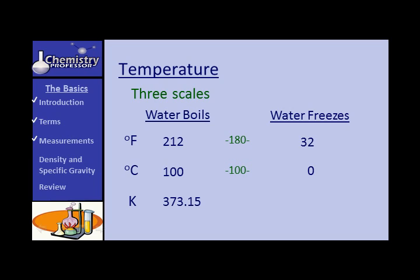For Kelvin, water boils at 373 K and freezes at 273 K — a range of 100 units. This tells us that a degree Celsius and a Kelvin unit are the same size. But the Fahrenheit degree is a much smaller unit — it takes more Fahrenheit units to express a temperature change than it does Celsius or Kelvin units.